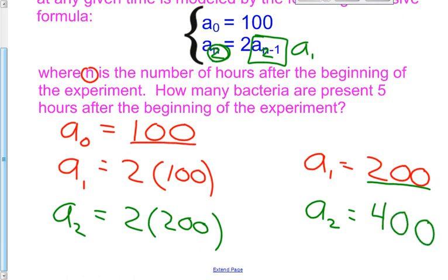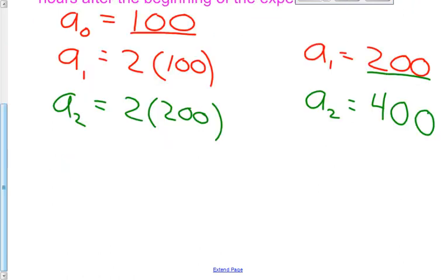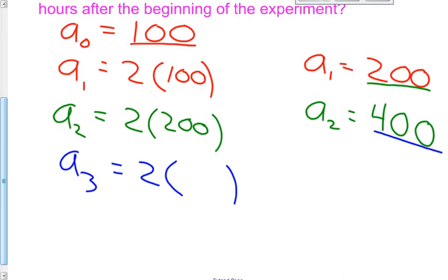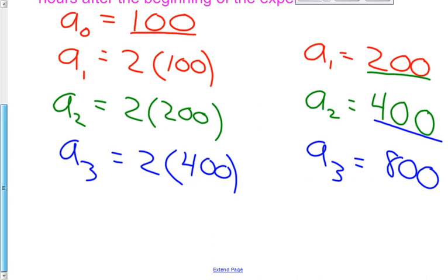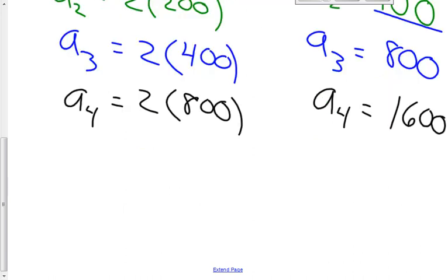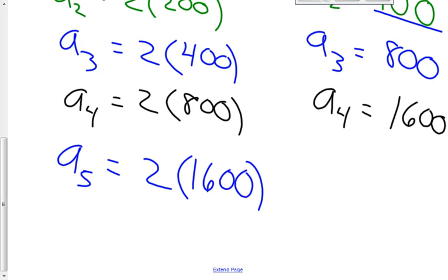Hopefully you've caught on to the pattern — all you're doing is multiplying 2 times the value of the previous term. For a sub 3, we take 2 times a sub 2, which is 400. So 2 times 400 — after 3 hours there are 800 bacteria. For a sub 4, it's 2 times 800 — a sub 4 is 1600. For a sub 5, it's 2 times the value of the previous term; the previous term is 1600.